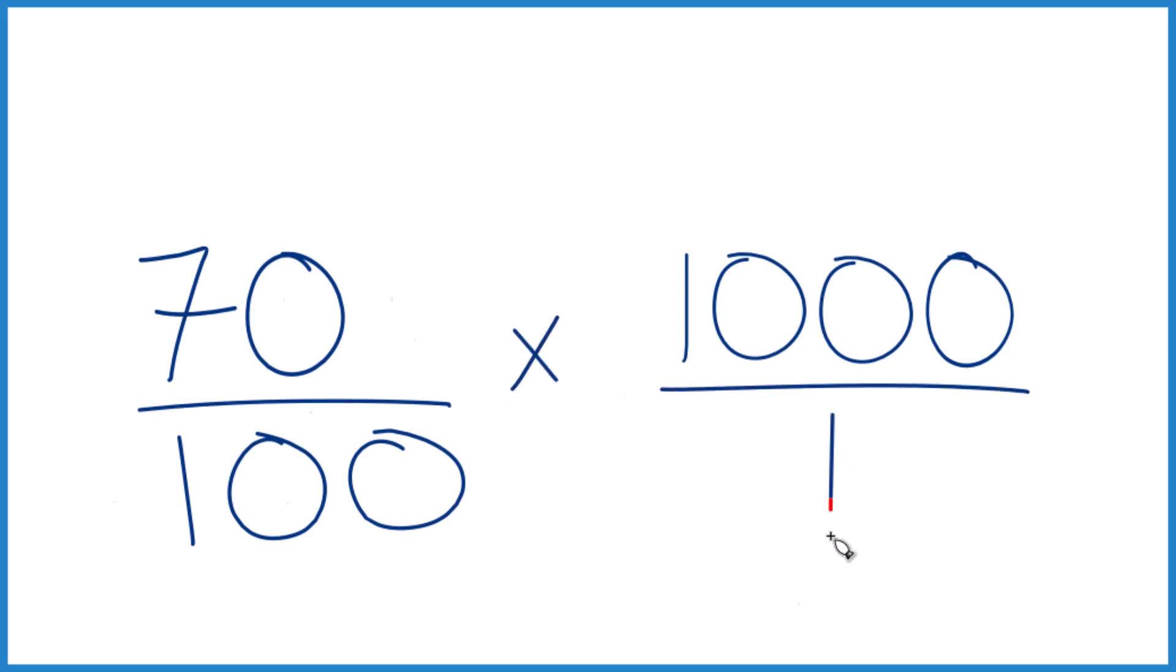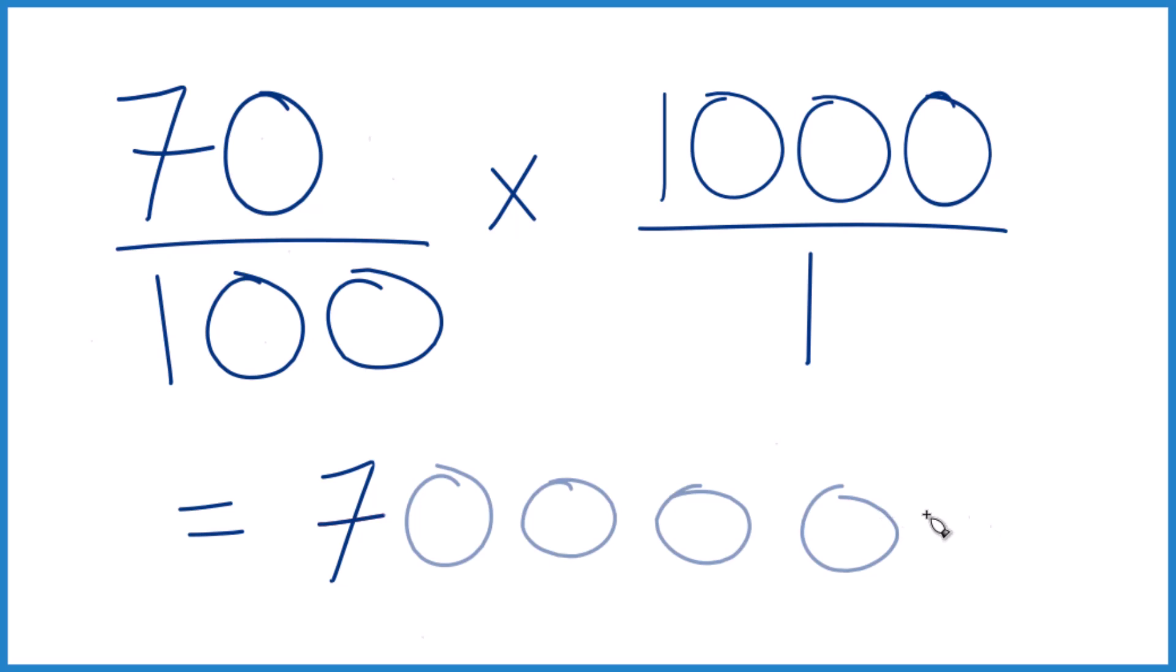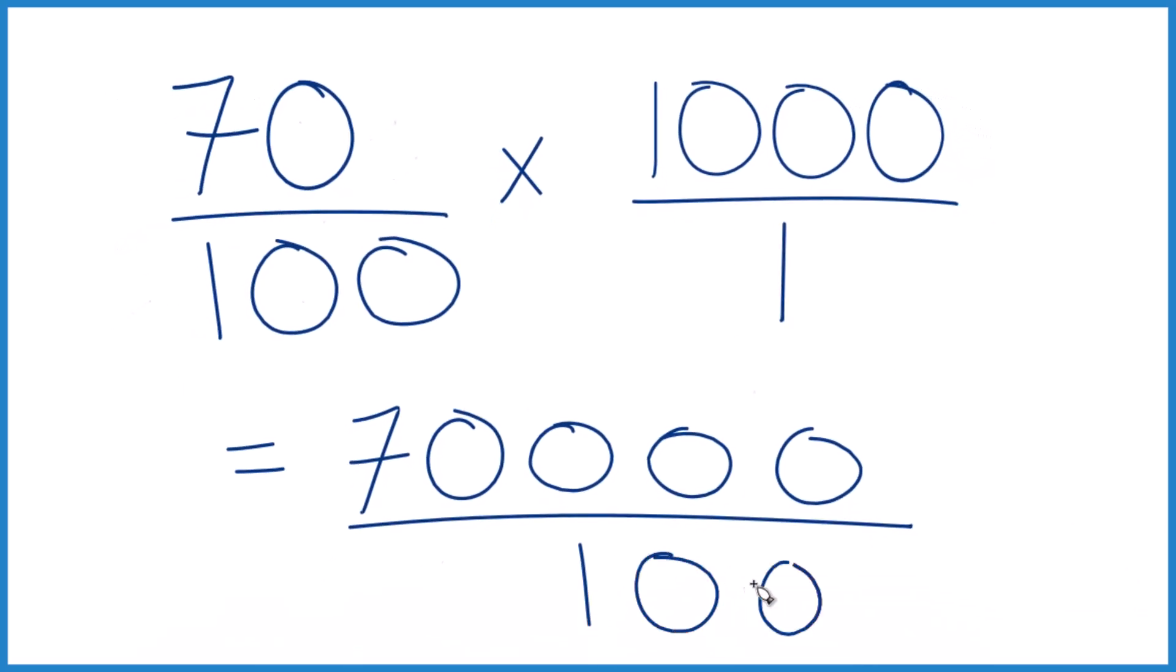Let's call this 1,000 over 1. Still 1,000, but now everything lines up. 70 times 1,000 equals 70,000. 100 times 1, that is 100. So when we divide 70,000 by 100, we get 700, just like we got before.